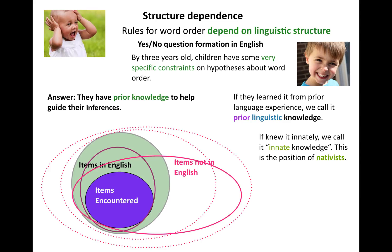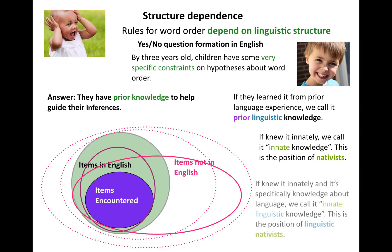If, however, it turns out that that prior knowledge happens to be innate — if the prior knowledge was innately available, somehow encoded in the structures that lead to brain development, that lead to the mind — then this would be the position of the nativist. That prior knowledge is, in fact, innate knowledge. And if children knew it innately, and specifically the knowledge turns out to be language knowledge that they knew innately, then we would call it innate linguistic knowledge. This is the position of the linguistic nativist.